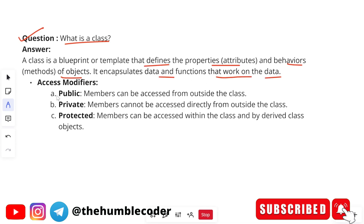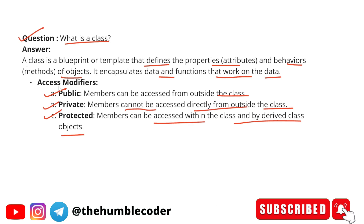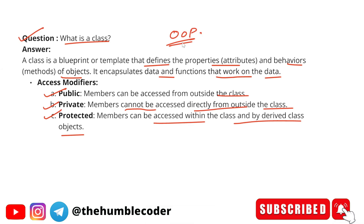Access modifiers in a class are public, private, and protected. Public means members can be accessed from outside the class. Private means members cannot be accessed directly from outside the class. Protected means members can be accessed within the class and by derived objects. These are not the only possible answers — you can answer in your own language. The main aim of providing these answers is so that you have material to speak about and won't be short of content in an interview.